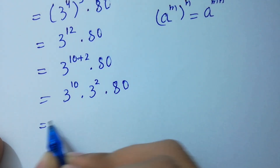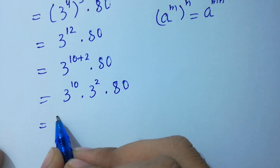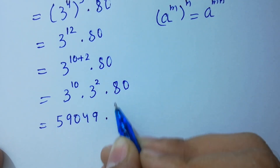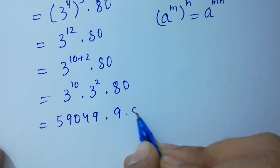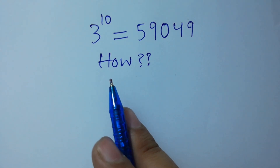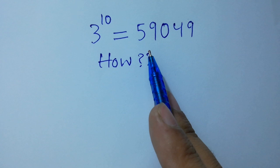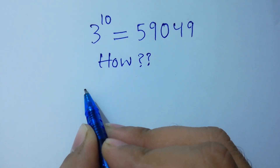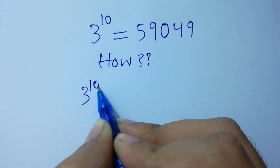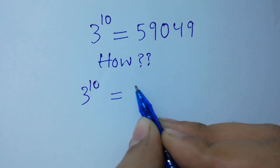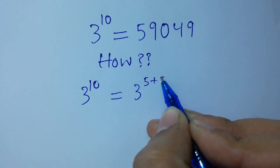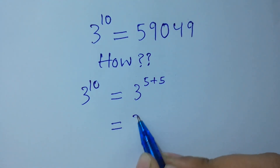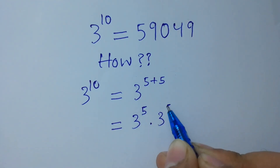Now, 3 to the power 10 equals 59049. Let's verify: 3 to the power 10 is the same as 3 to the power 5 plus 5, because 5 plus 5 equals 10. So it equals 3 to the power 5 times 3 to the power 5. We count 3 multiplied 5 times, and similarly on the other side.